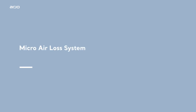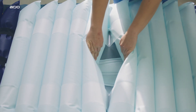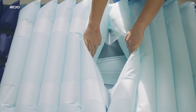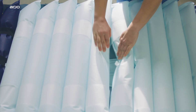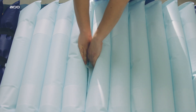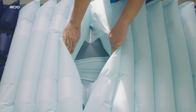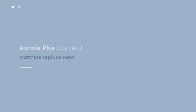Micro air loss system. Incorporated into the base cover, the micro air loss system introduces air surrounding the cells to help reduce heat buildup within the mattress.